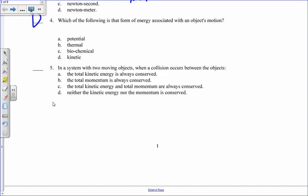The system with two moving objects. When a collision occurs between the objects, which of these? The total kinetic energy is always conserved - that's not true. In fact, unless there are only field forces involved, the kinetic energy isn't conserved. Momentum is always conserved, regardless of the type of collision. So the answer is b.